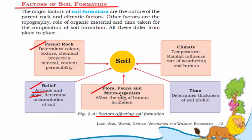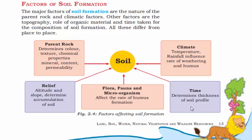The third factor is flora, fauna, and microorganisms — humus, the dead and decayed matter of plants and animals, acts as a natural fertilizer. The fourth factor is time — it takes a long time for a large piece of rock to convert into a thick layer of soil through weathering. The fifth and last factor is climate — temperature determines rainfall, and with rainfall the weathering process increases. When water accumulates it moves, carrying soil along with it.